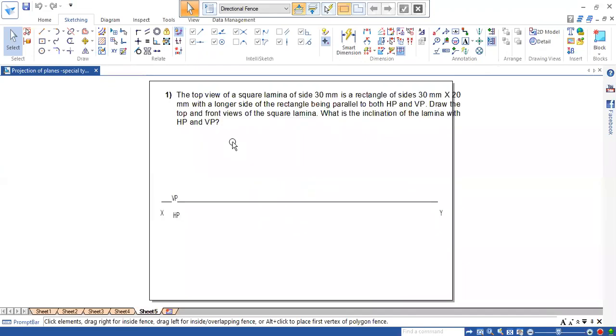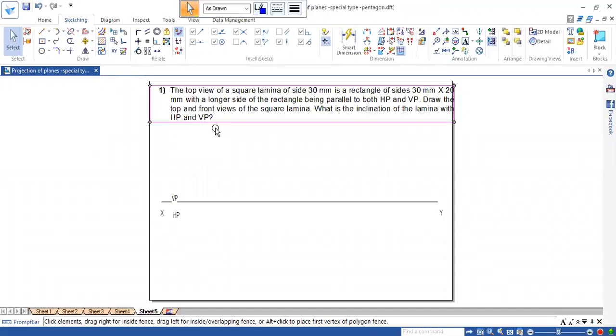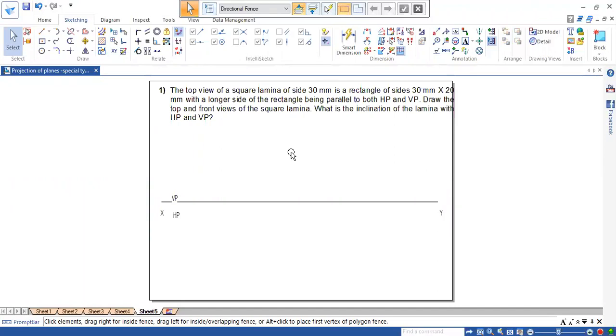The top view of a square lamina of side 30 mm is a rectangle of sides 30 by 20 mm with a longer side of the rectangle being parallel to both HP and VP. Draw the top and front views of the square lamina and what is the inclination of the lamina with respect to HP and VP. So here the lamina is a square lamina of side equal to 30 mm. And if you look carefully into the problem...